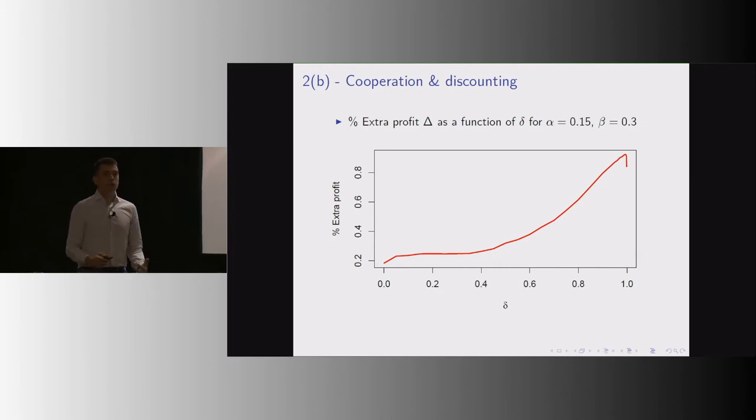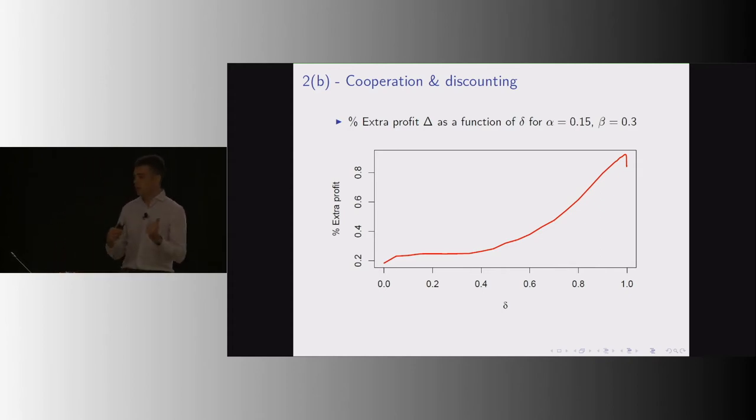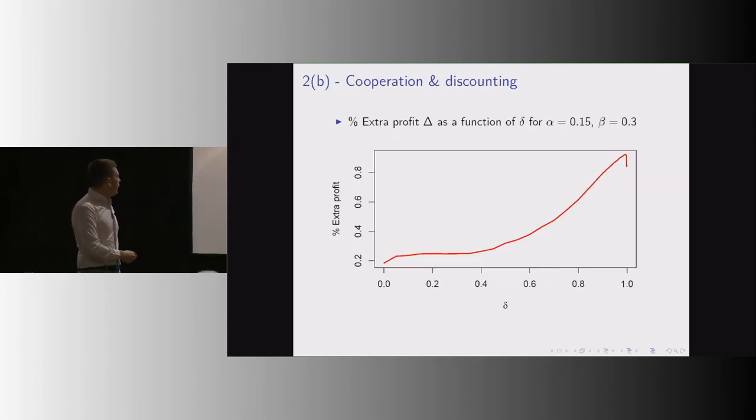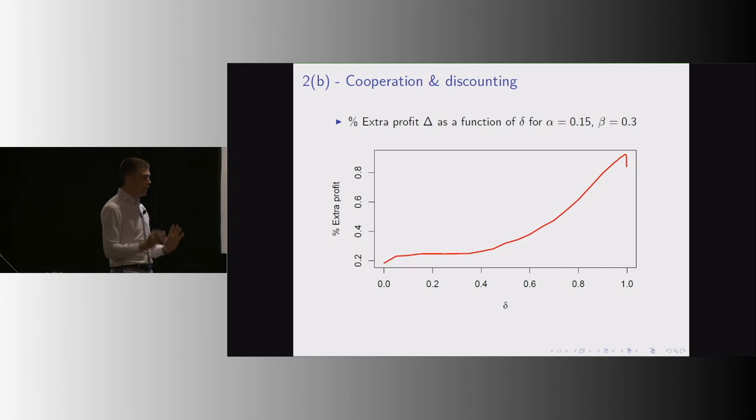Another thing that we learned from this exercise is that the amount of cooperation that we're getting is way lower than the one which is implied by the underlying mainstream model that we used to think about collusion. What this means is that we're missing the relevant incentive constraint, so we really need to go back to the drawing table to understand what's actually going on.